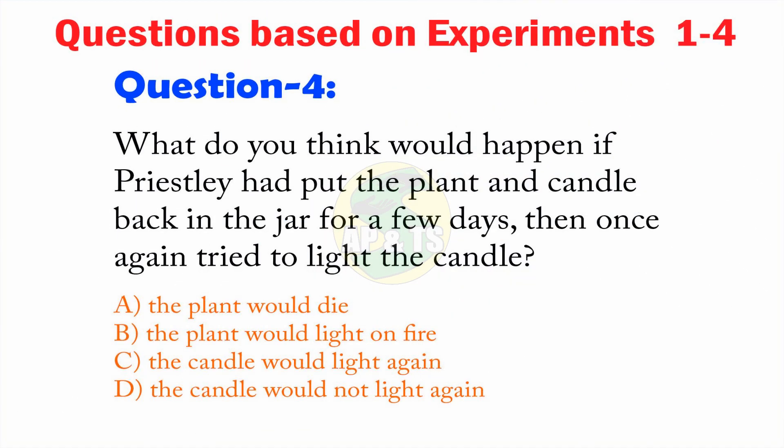Question 4: What do you think would happen if Priestley had put the plant and candle back in the jar for a few days and then once again tried to light the candle? A — The plant would die, B — The plant would light on fire, C — The candle would light again, D — The candle would not light again. What is your answer?